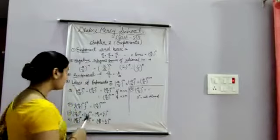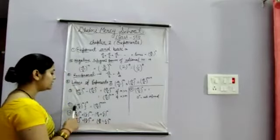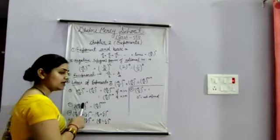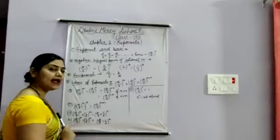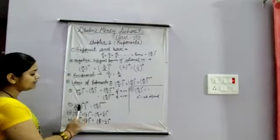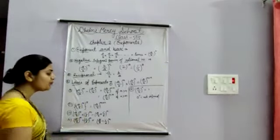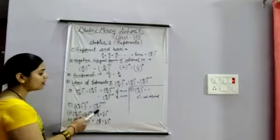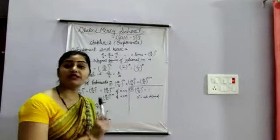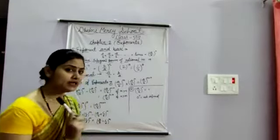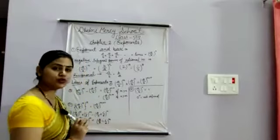The third law: if A upon B is inside a bracket raised to the power M, and that whole expression is raised to the power N, then we multiply the powers. The result is A upon B to the power M into N.